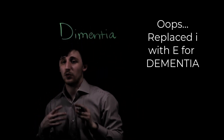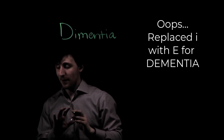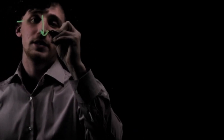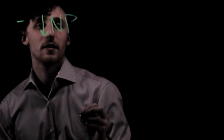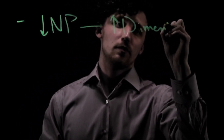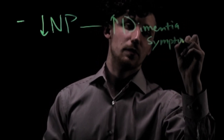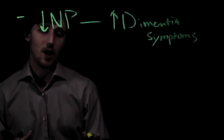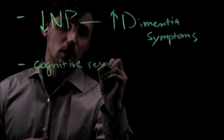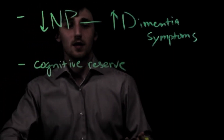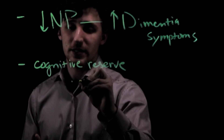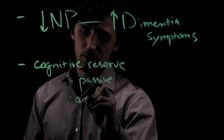There is a known correlation between neuroplasticity and dementia — not causation, but correlation. A decrease in neuroplasticity is linked to the onset of dementia symptoms. This leads to a key concept: cognitive reserve, a hypothetical measure of our tenacity to resist dementia symptoms, which is closely involved with neuroplasticity.